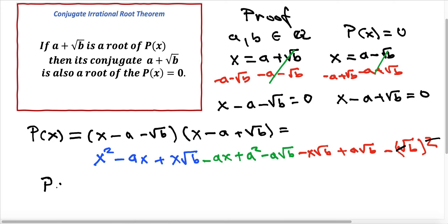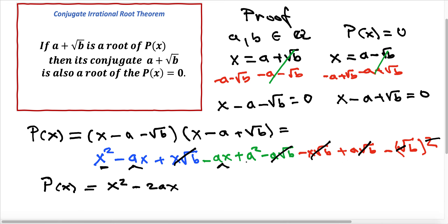The polynomial function p of x equals: x squared, then minus ax minus ax gives minus 2ax. The terms plus x square root of b and minus x square root of b cancel. Likewise, minus a square root of b and plus a square root of b cancel. What remains is plus a squared, and from the simplified square root term, minus b.